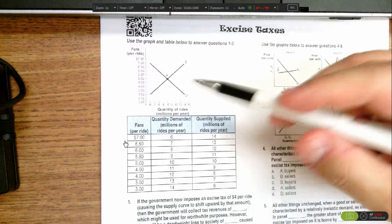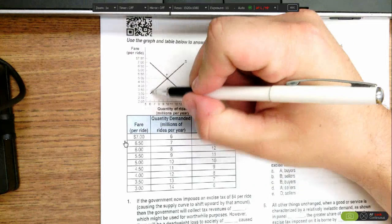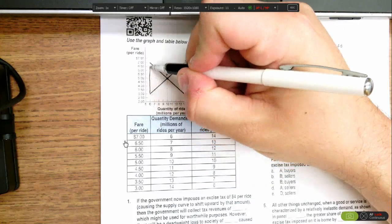One is by looking at the graph. We try to find where there is a gap of $4 between the supply curve and the demand curve. That gap exists right here at 6 million rides.